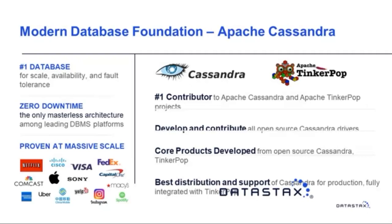This masterless architecture provides true fault tolerance at massive scale. Macy's, for example, has over seven years of zero downtime, including through upgrades and maintenance. Cassandra was also designed for linear scale, meaning with the addition of new nodes, there is a predictable performance increase — no performance degradation when scaling out.